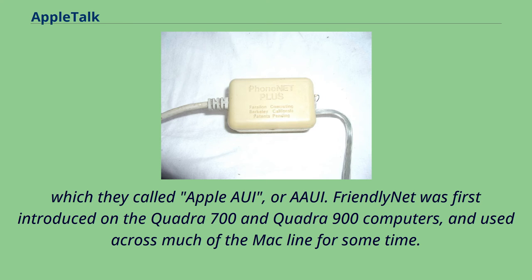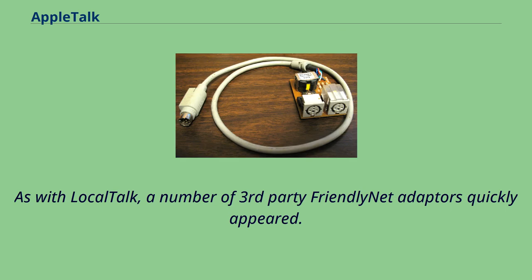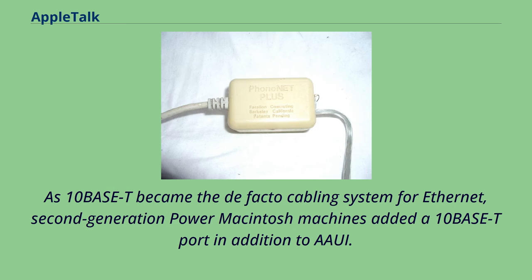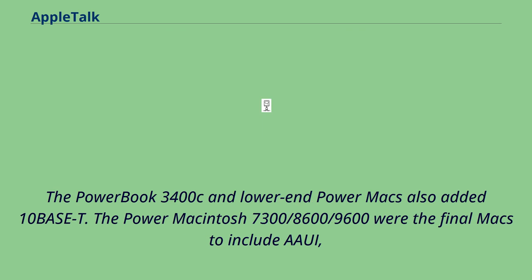A number of third-party AAUI adapters quickly appeared. As 10Base-T became the de facto cabling system for Ethernet, second-generation Power Macintosh machines added a 10Base-T port in addition to AAUI. The PowerBook 3400C and lower-end Power Macs also added 10Base-T. The Power Macintosh 7300/8600/9600 were the final Macs to include AAUI, and 10Base-T became universal starting with the Power Macintosh G3 and PowerBook G3.